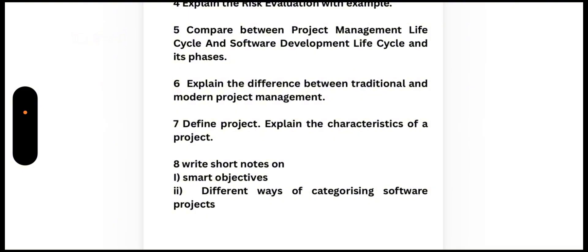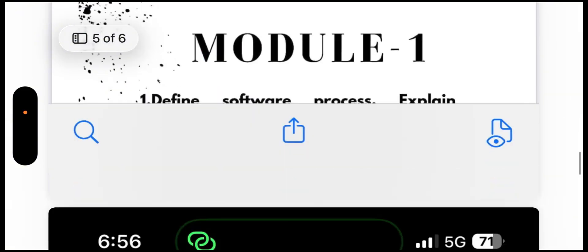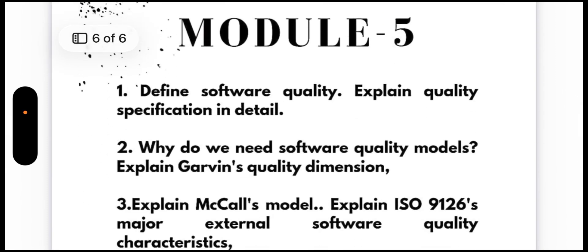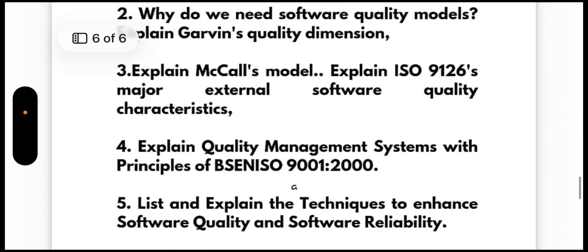For Module 5: First, define software quality and explain quality specification in detail. Second, why do we need software quality models? Third, explain Garwin's quality dimensions. Fourth, explain McCall's model. Fifth, explain ISO 9126's major external software quality characteristics. Sixth, explain quality management systems with principles of BSC and ISO 9001:2000.